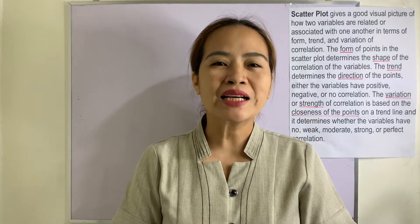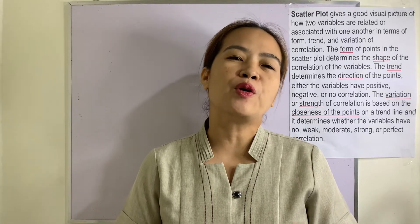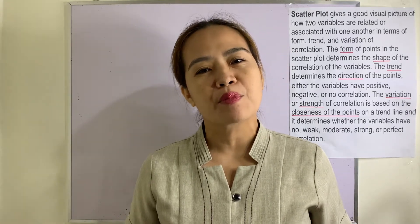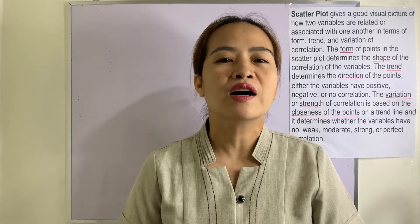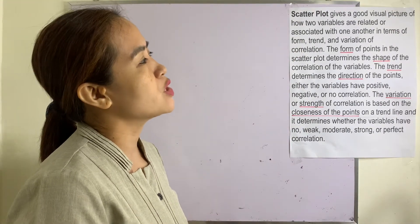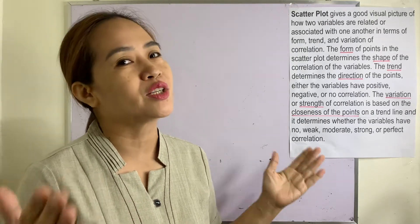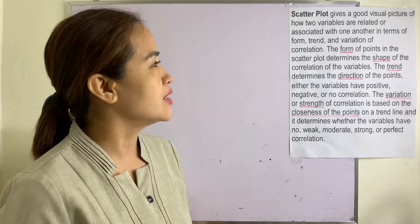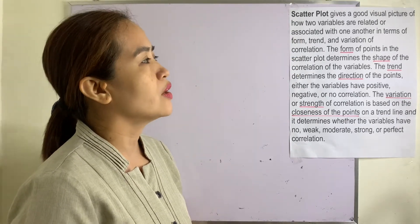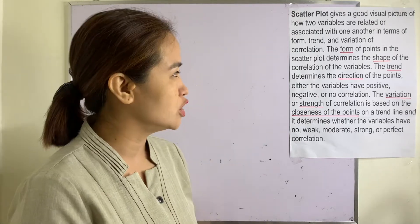Hello everyone, welcome to another session of Mommy Teo Teaches Math. Our topic for today is describing the shape, form, strength, and variation of a scatter plot. A scatter plot gives a good visual picture of how two variables are related — we are talking about bivariate data, or variables associated with one another.